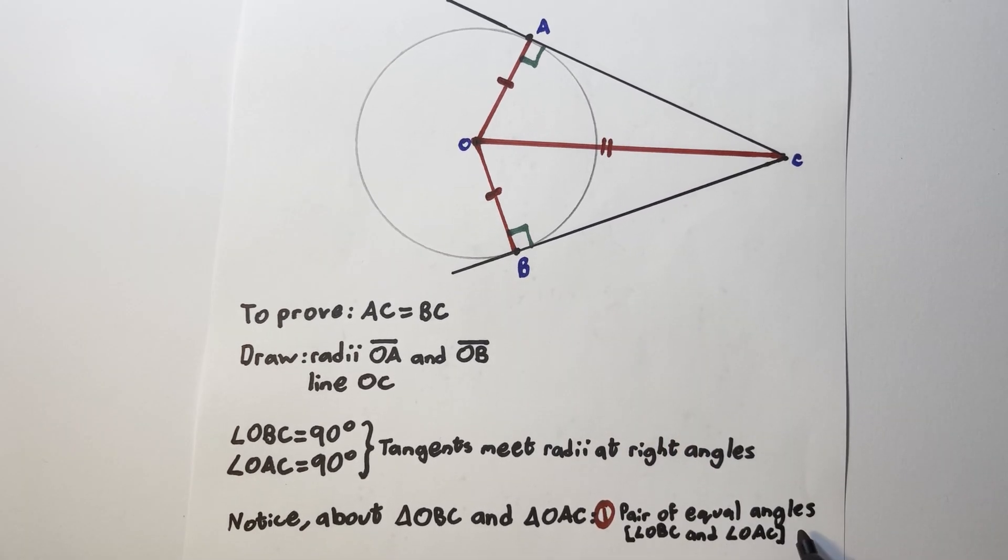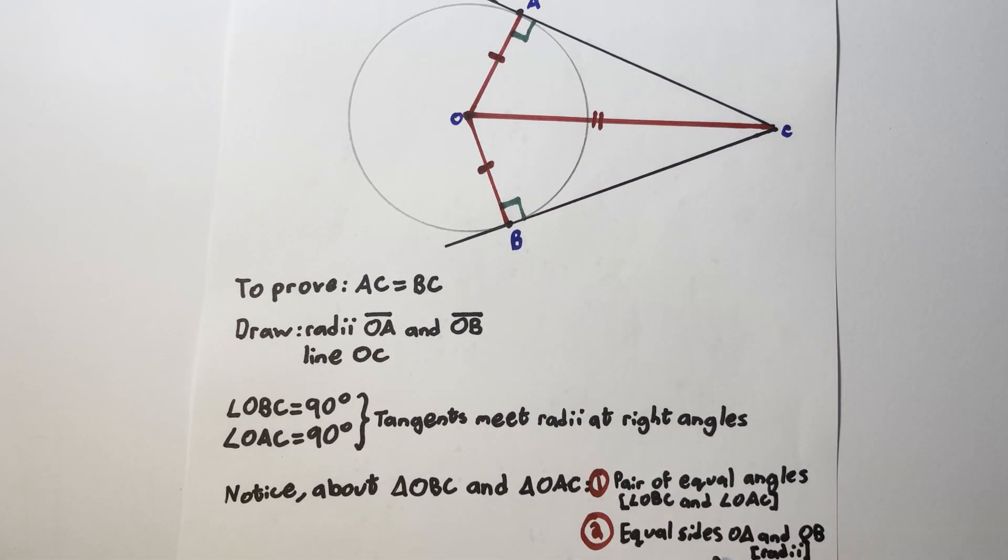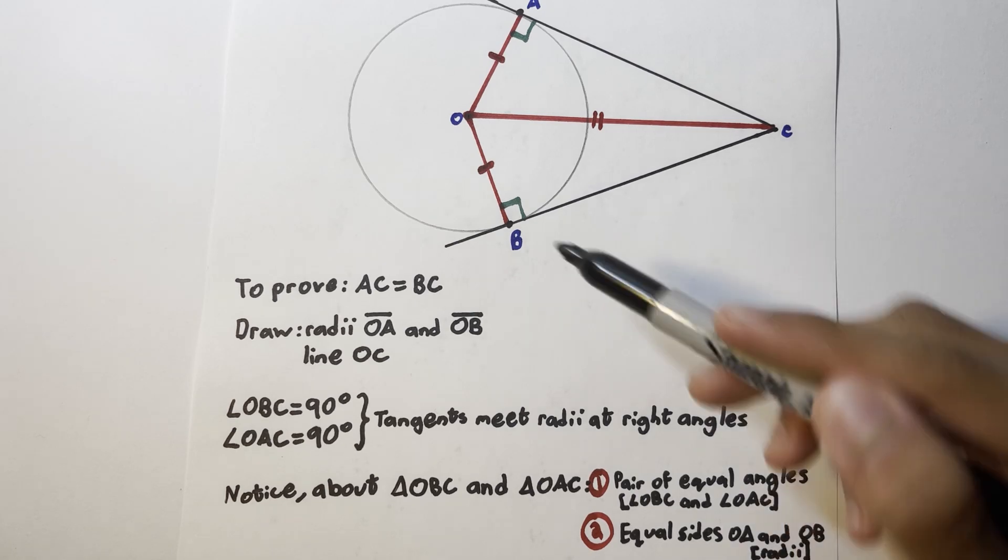Firstly, we have a pair of equal angles, the angles OBC and OAC, which are both right angles. Next, we have two equal sides, OA and OB, which are both radii.